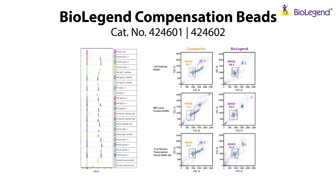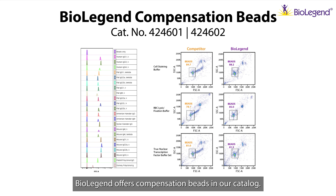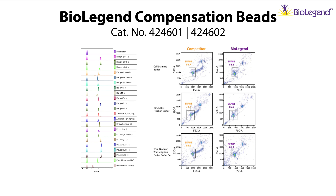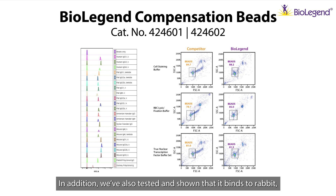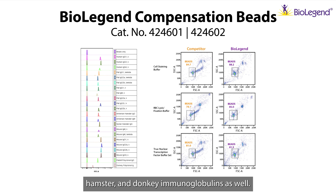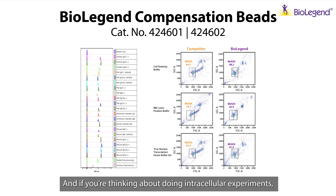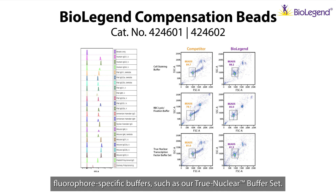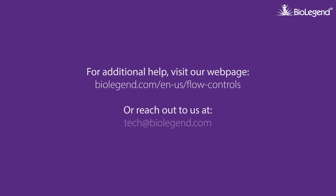BioLegend offers compensation beads in our catalog. We've tested and shown that they're compatible with most human, mouse, and rat immunoglobulin isotypes, as well as most kappa and lambda chains. We've also shown that they bind to rabbit, hamster, and donkey immunoglobulins as well. If you're thinking about doing intracellular experiments, we've shown compatibility with specialized fixation and permeabilization buffers such as our True-Nuclear buffer set. In today's video, we talked about instrument controls. If you have any additional questions, feel free to reach out to tech@BioLegend.com.